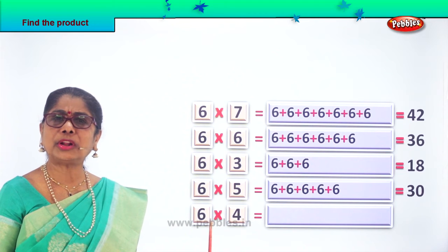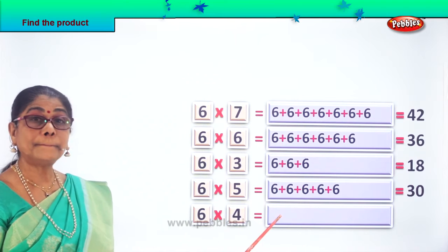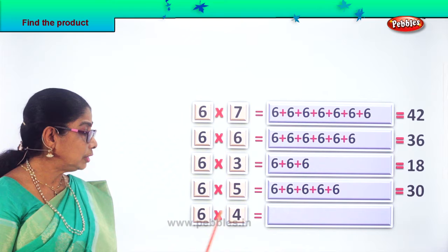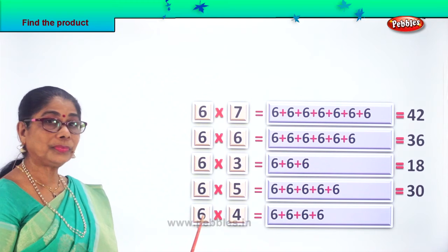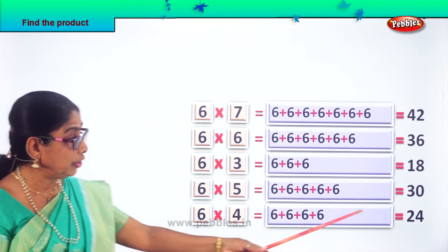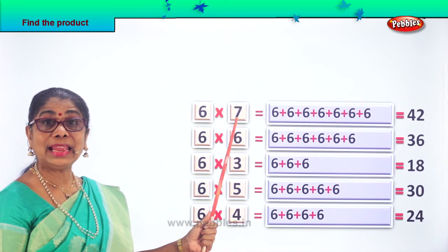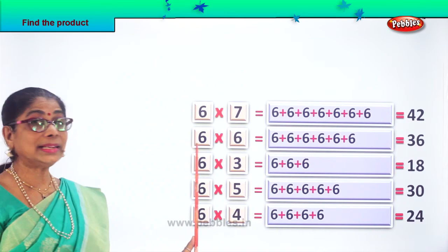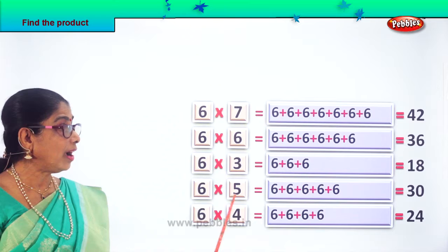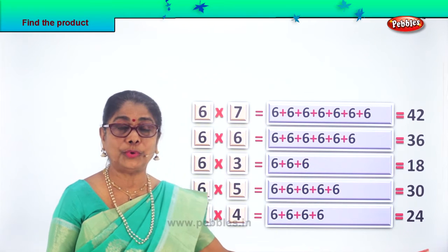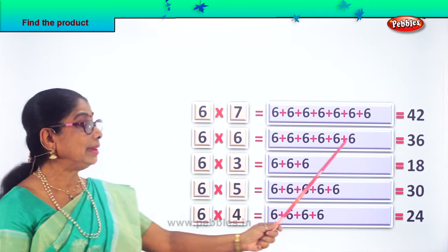Next, find the product of 6 into 4. What are 6 fours? 6 fours are 24. Very good. So you learned to find the product of 6 into 7 — 42; 6 into 6 — 36; 6 into 3 — 18; 6 into 5 — 30; 6 into 4 — 24. We found the product of these numbers using repeated addition.